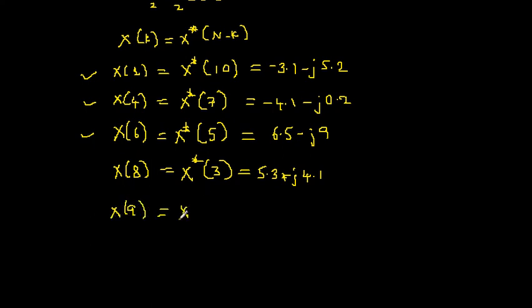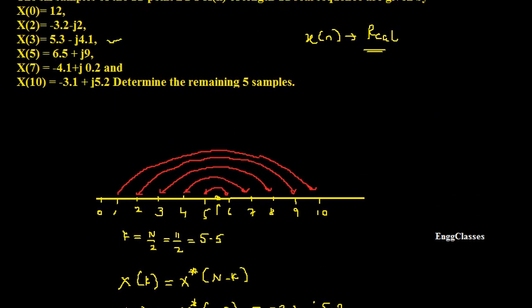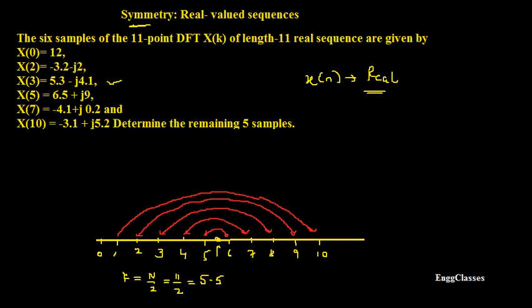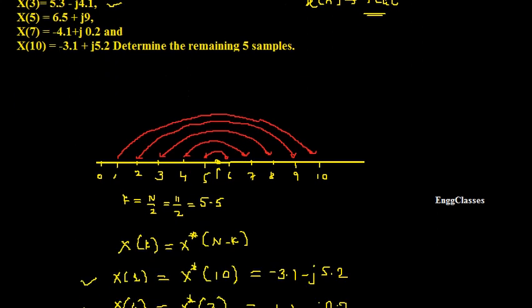Finding the last sample X(9): X(9) = X*(11 − 9) = X*(2). X(2) is given as −3.2 − j2, so its complex conjugate is −3.2 + j2. Therefore X(9) = −3.2 + j2. That completes all the remaining 5 samples.